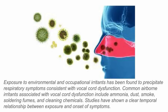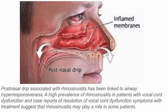Exposure to environmental and occupational irritants can precipitate respiratory symptoms consistent with vocal cord dysfunction. Common airborne irritants include ammonia, dust, smoke, soldering fumes, and cleaning chemicals, with studies showing a clear temporal relationship between exposure and symptom onset. Post-nasal drip associated with rhinosinusitis has also been linked to airway hyperresponsiveness and may play a role in some patients.